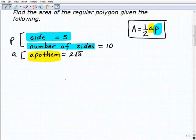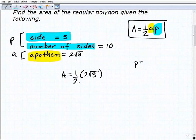So the area equals one-half, the apothem is 2 times the square root of 3. Now the perimeter, let's go ahead and find that. The perimeter is going to be the number of sides - here we have 10 sides - times the length of one side, so that's 5, so the total perimeter is going to be 50.